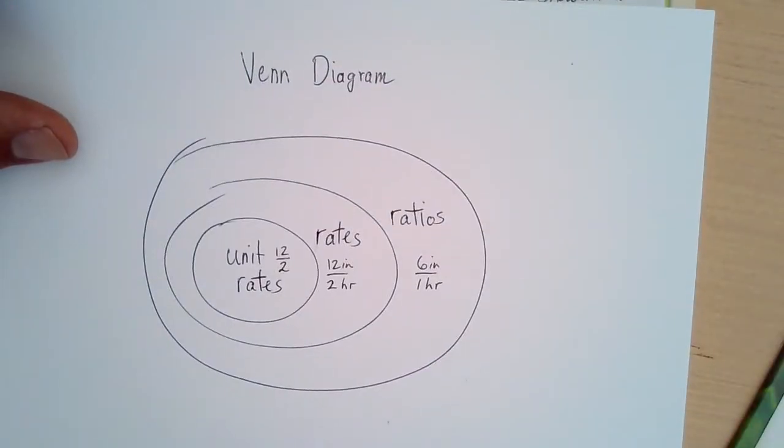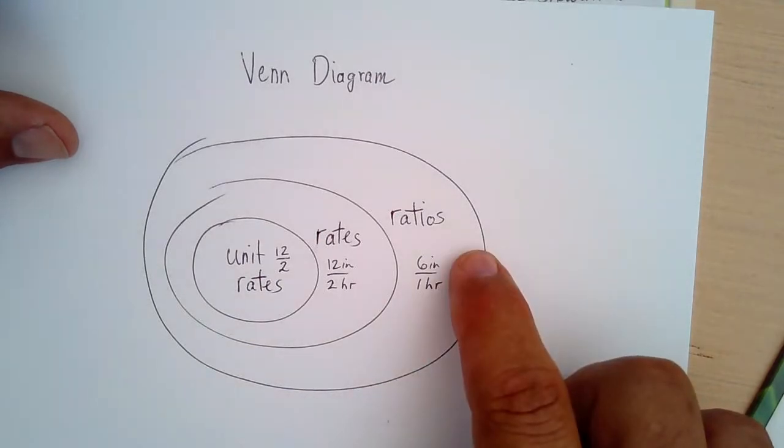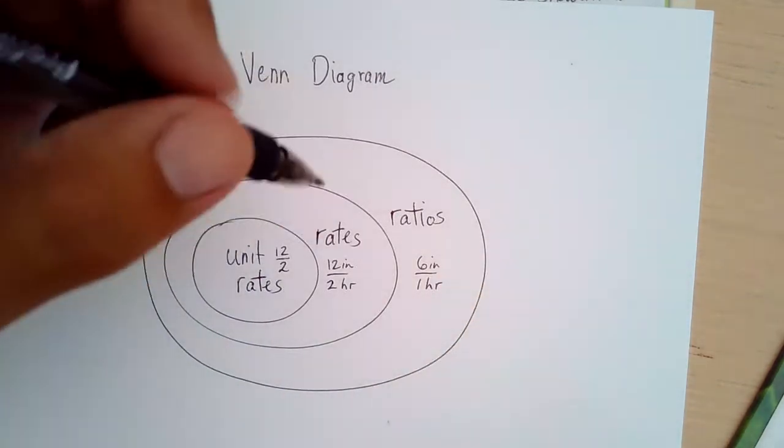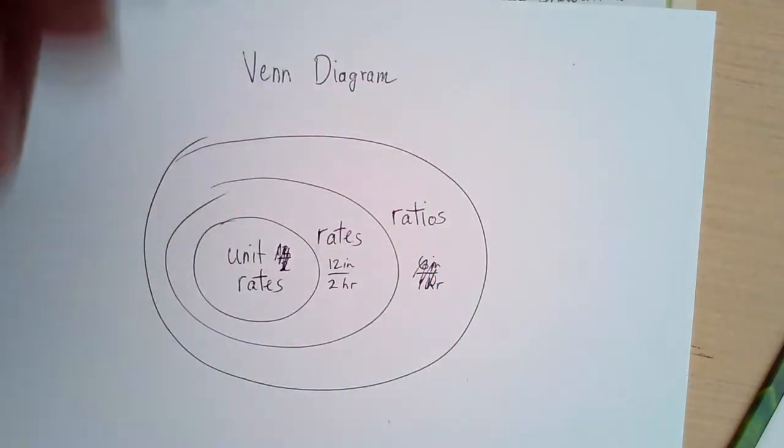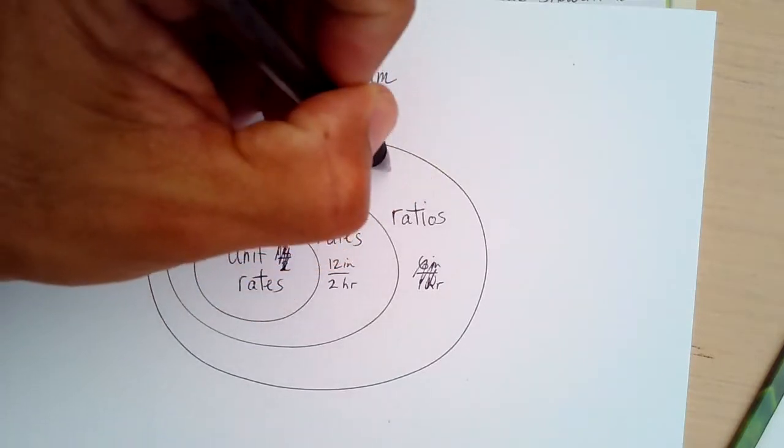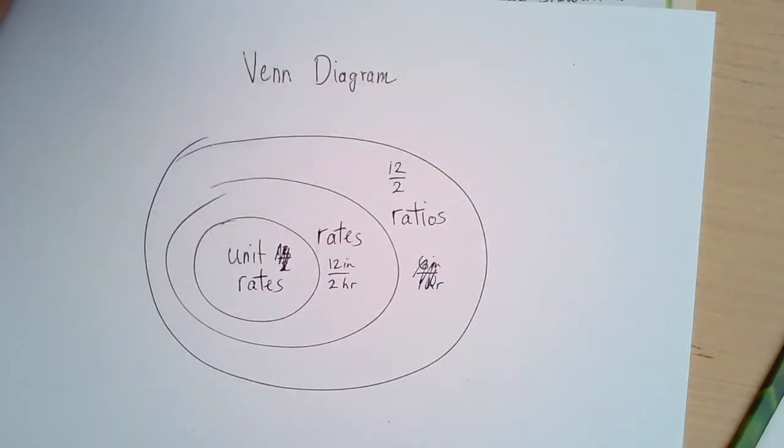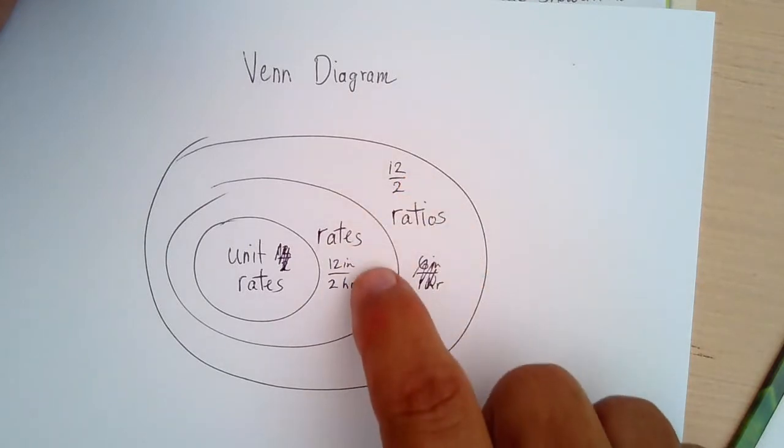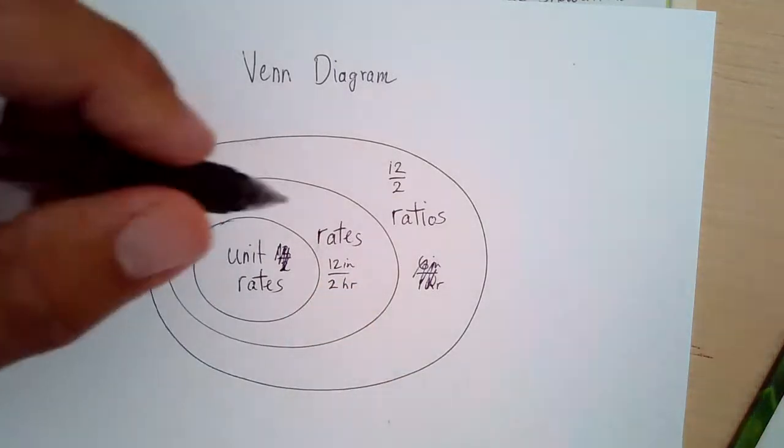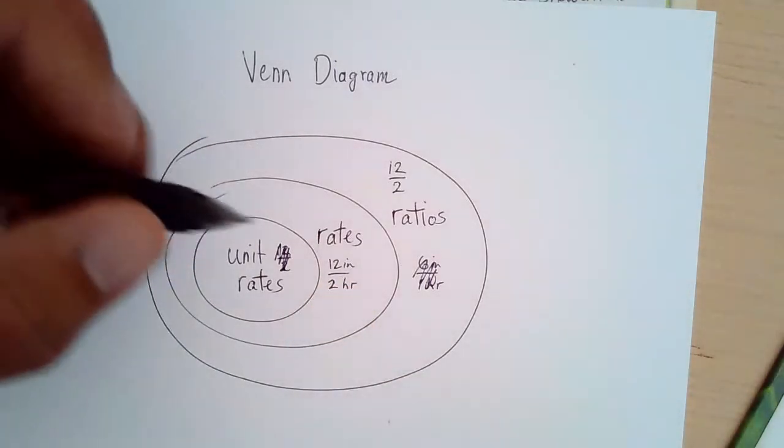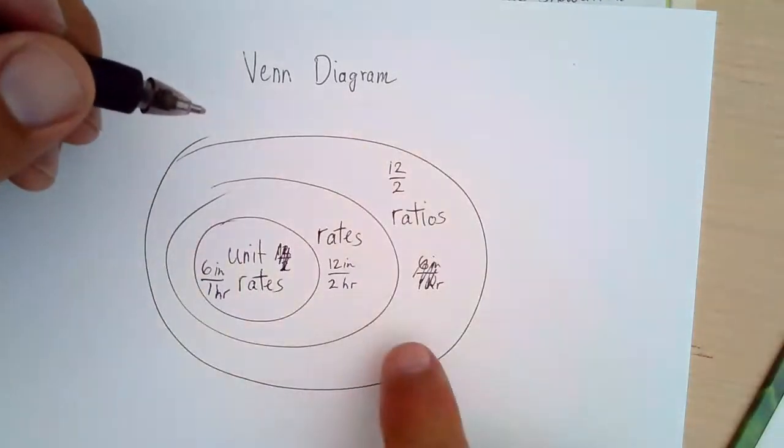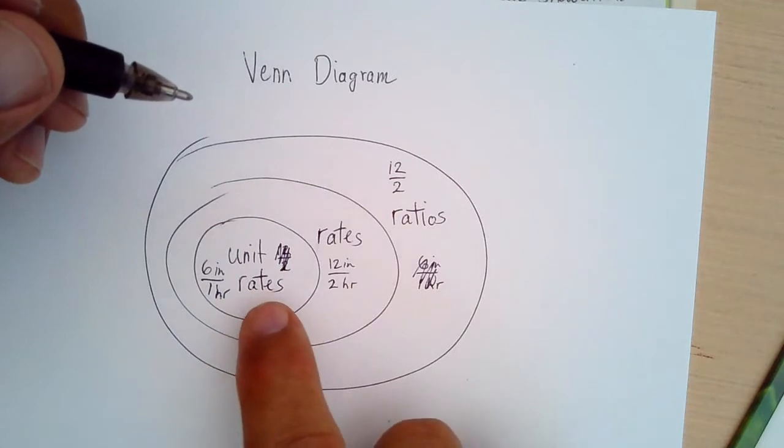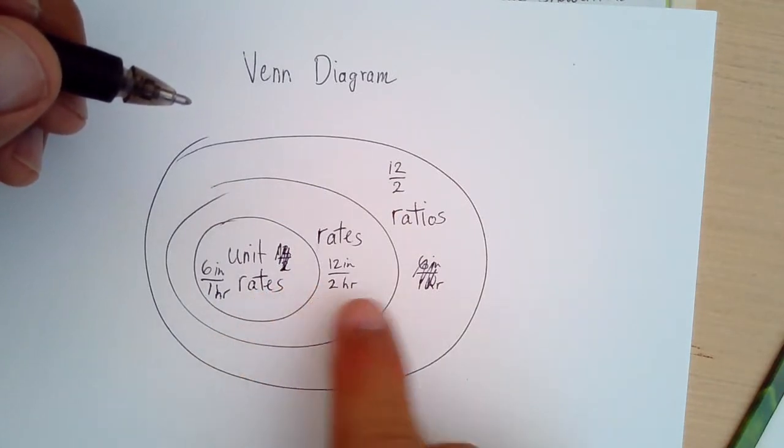And I want to make a Venn diagram. Remember that ratios - oh my God, I have this totally backwards. Whoopsie. This is in real time right now. We have a ratio would be something like 12 divided by 2. And a rate is that ratio with labels on it, like inches per hour. And then the unit rate would be that simplified. The denominator always is 1 in a unit rate. So that would be 6 inches in 1 hour. So the unit rate is a special type of rate, which is a special type of ratio.